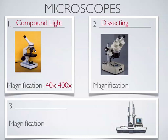A dissecting microscope's magnification depends on which one you get. Ours will go from 10x at the lowest, and some will go to 40x, some to 30, some only to 20. The magnification in the dissecting scope is much smaller than in the compound microscope. Generally, dissecting microscopes don't go that high because you'll get larger objects in the dissecting microscope, so you don't need to magnify the image as much.